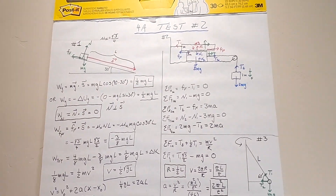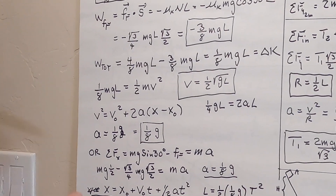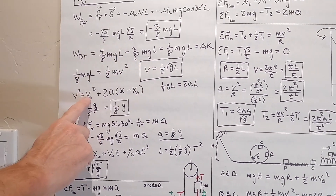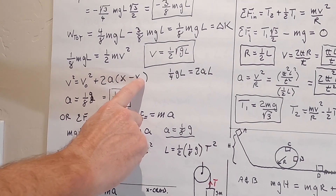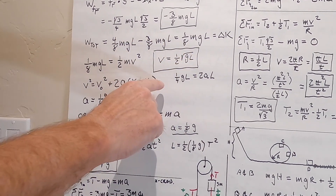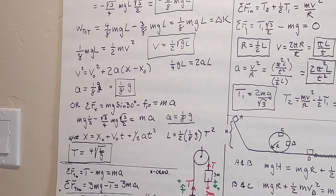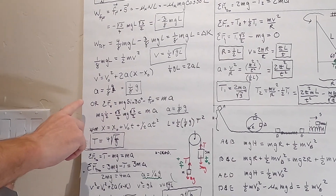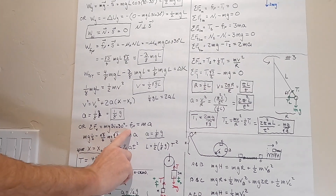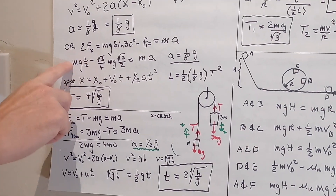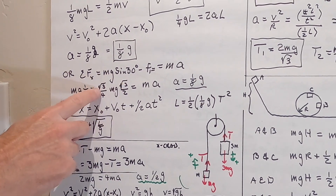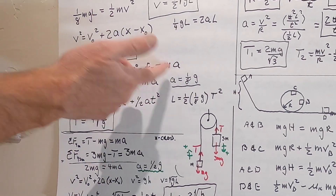I also asked you to find the acceleration down the incline. We could have used forces, but we can just use constant acceleration: v squared equals v naught squared plus 2a times (x minus x naught). We got v squared from before; v naught was zero; and x minus x naught is l. So 1/4 gl equals 2al. Cancel the l's and divide by 2, so a is just 1/8 g. It better be less than g. Or we could have used the sum of forces: mg sine 30 minus friction equals ma, which gives mg sine 30 minus mu_k times n equals ma. Combining gives 3/8 and 4/8, which again gives 1/8 g. You could have worked it out either way.